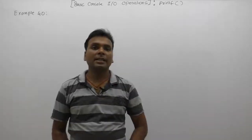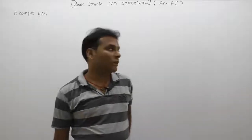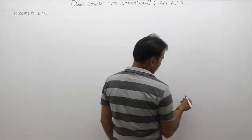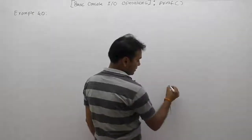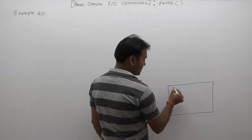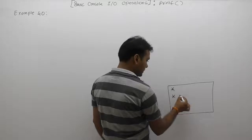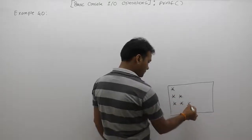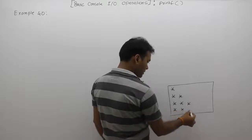Now let's see the next example: how to display required patterns. We want to display some pattern in a given format — like on a monitor, displaying star one time, then star two times, star three times, and star four times.